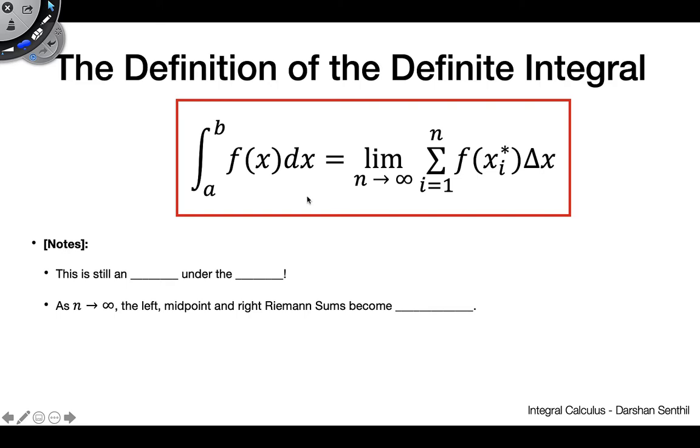The last thing I want to say on this is I have a few notes that I want to go over with you guys. Firstly, is that even though we're now no longer using the Riemann sum, or we're now using this limit here with our Riemann sum, this definite integral here is still an area under the curve.